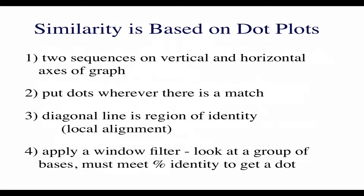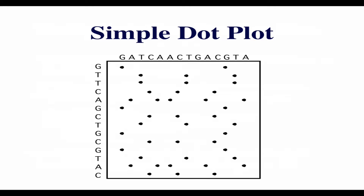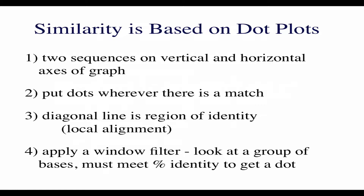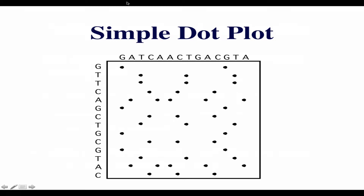I like to think about similarity in terms of a dot plot. Even if you're using a completely different computational method, it's a helpful visualization tool to show what regions or letters match between two sequences. There are two axes, vertical and horizontal. I simply put a dot wherever the vertical and horizontal sequences have the same letter — G and G, T and T, another T and T, etc. A diagonal line would indicate a region of high identity and possible homology.